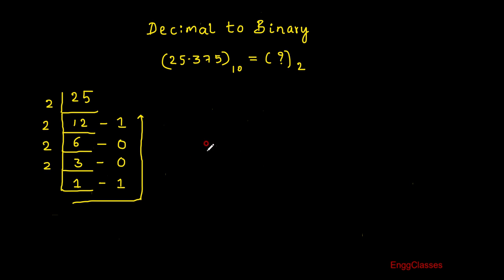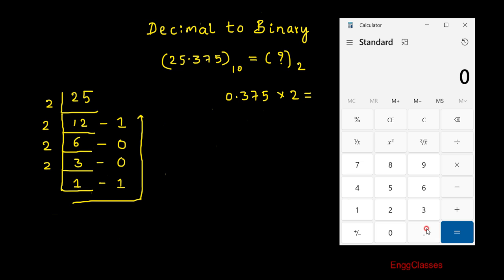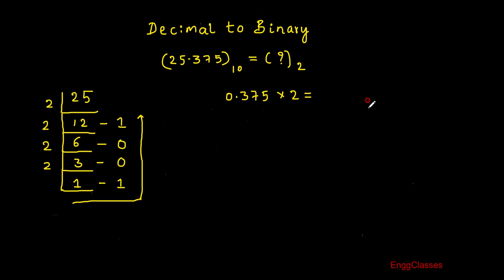Now let me consider the fractional part, which is 0.375. The method is to multiply this number successively by 2. So 0.375 multiplied by 2 gives 0.75 as the answer. At the integer part I have 0, so I write 0 here.